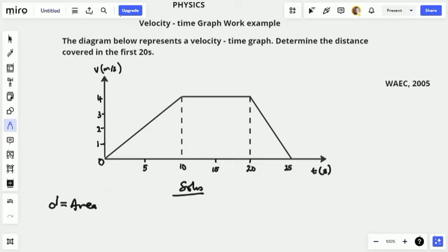So between zero to 20 seconds, what kind of shape do you have here? Of course it is a trapezium. Why do I call it a trapezium? It has two parallel sides, top and below, and two non-parallel sides also.